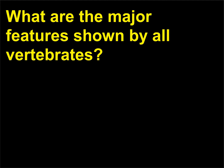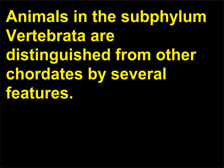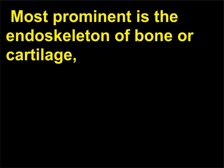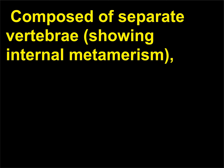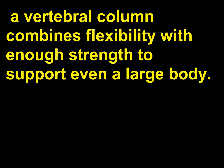What are the major features shown by all vertebrates? Animals in the subphylum Vertebrata are distinguished from other chordates by several features. Most prominent is the endoskeleton of bone or cartilage centering around the vertebral column, spine or backbone, composed of separate vertebrae showing internal metamerism. A vertebral column combines flexibility with enough strength to support even a large body.